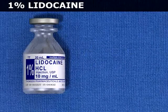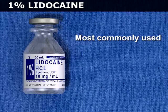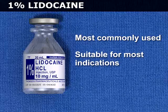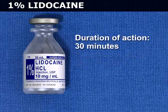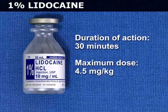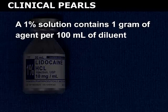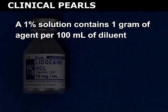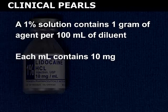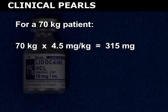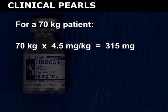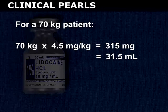1% lidocaine is the most commonly used local anesthetic agent and is suitable for most indications. The duration of action is approximately 30 minutes, and the maximum dose is 4.5 mg per kg. A 1% solution contains 1 g of agent per 100 mL of diluent, and thus each mL contains 10 mg. For a 70 kg patient, the maximum dose of 1% lidocaine is 315 mg, or 31.5 mL.